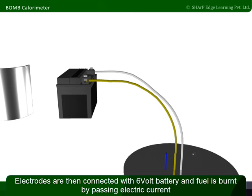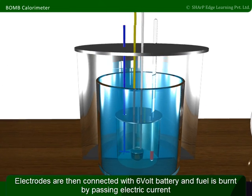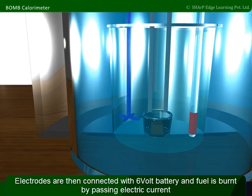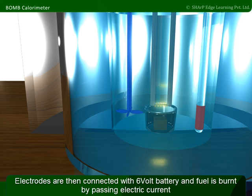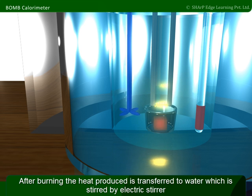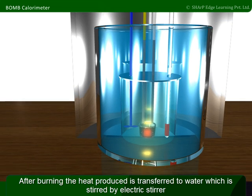Electrodes are then connected with a 6-volt battery and the fuel is burnt by passing electric current. After burning, the heat produced is transferred to water which is stirred by an electric stirrer.